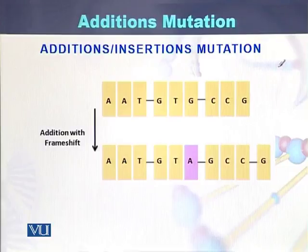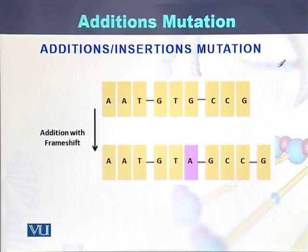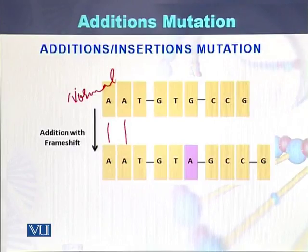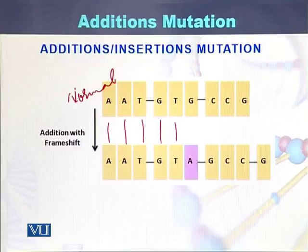In this diagram, we can see how a nucleotide is added into the sequence of the DNA. If we do the comparison, this is the normal DNA sequence. In the normal DNA sequence, if we do a comparison, there is A, T, G, T, and then there is addition of a nucleotide A.